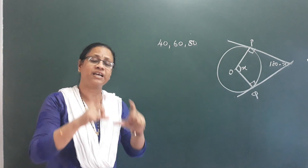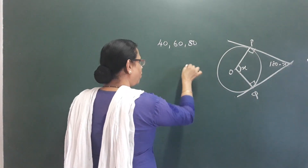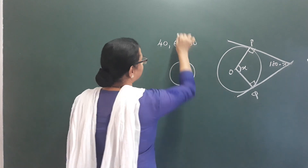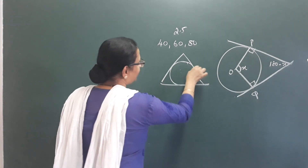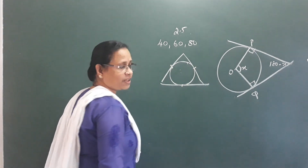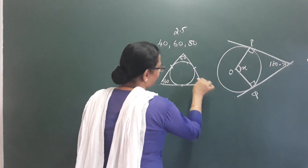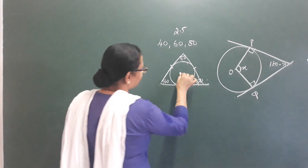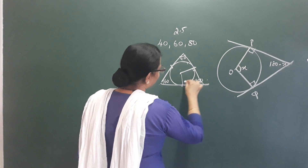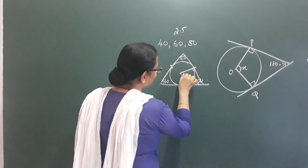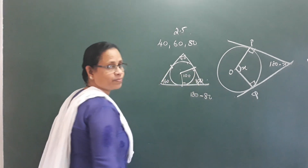We have to draw a triangle on the circle. A circle is 2.5 cm. This is 3 tangents — this is a triangle. This triangle has angles 40, 60, and 80. This is the center. This is the joint. This is perpendicular. This is 90. This is 180 minus 80, that means this is 100.